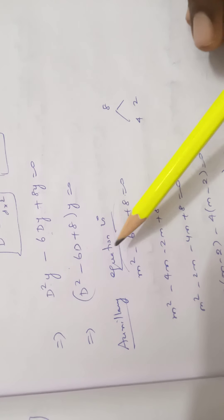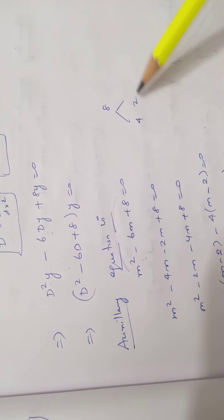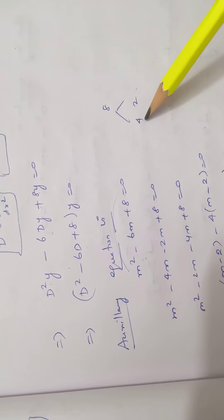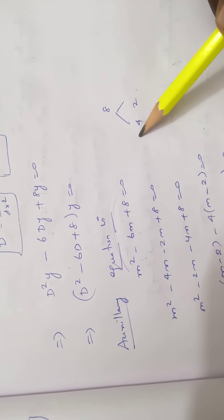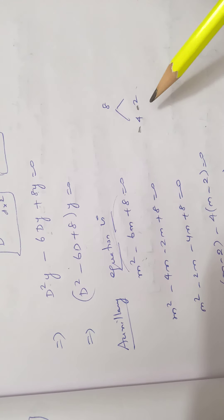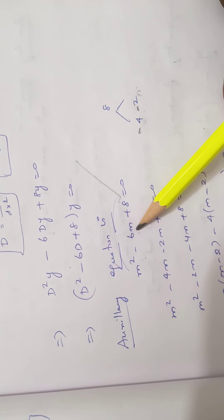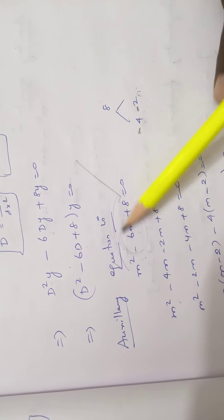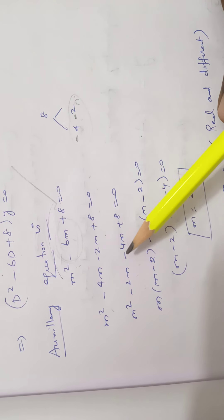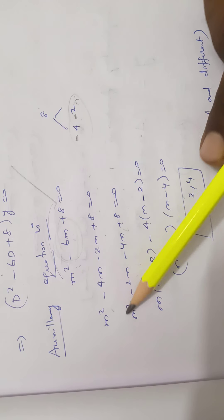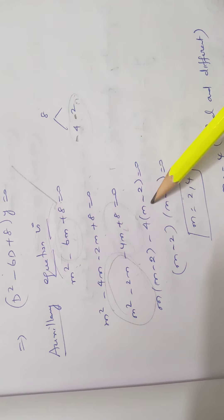The auxiliary equation: all D's are transformed to m, giving m² - 6m + 8 = 0. This can be split into two factors: -4 × -2 = 8, and -4 + (-2) = -6. So m² - 6m + 8 = (m - 4)(m - 2) = 0, giving m = 2 and m = 4.